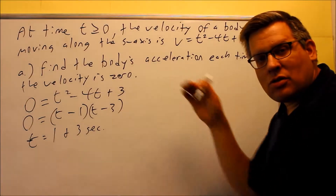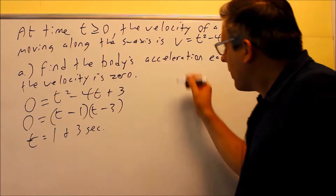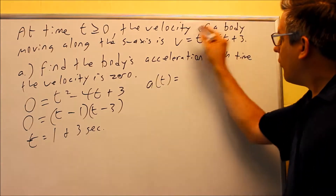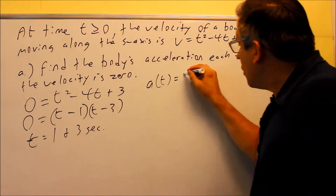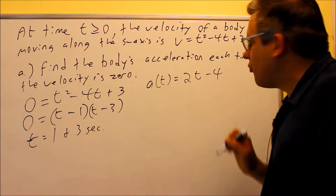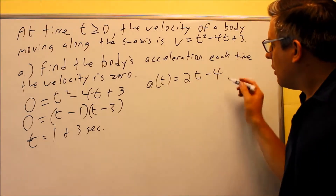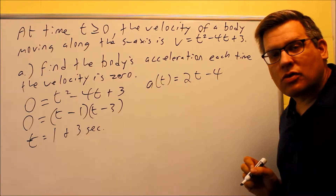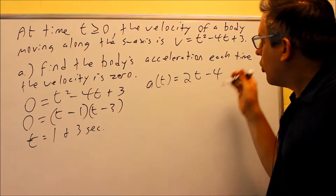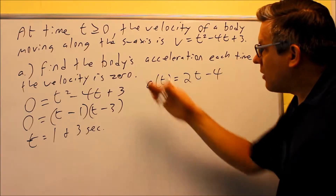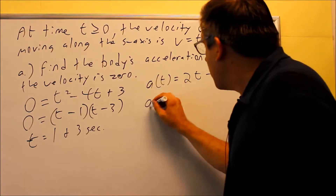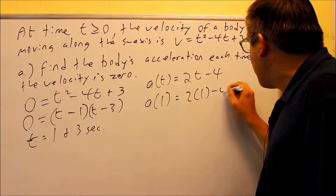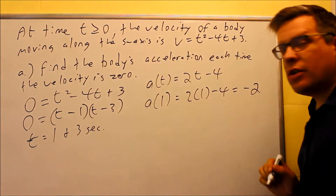Now we know the times where the velocity is going to be zero. Next, I need to put these times into the acceleration function. So let's find a(t) — we have to take the derivative of our velocity, and we get 2t minus 4. Now we're just going to put in our two times. We want to find the body's acceleration each time the velocity is zero, so we do a(1): 2 times 1 minus 4.